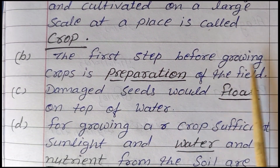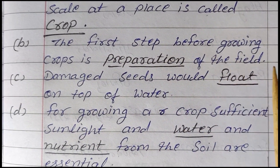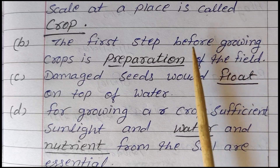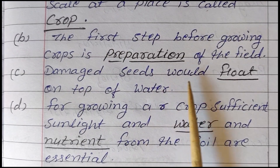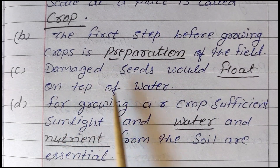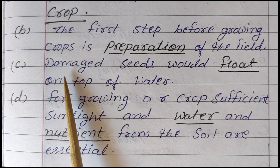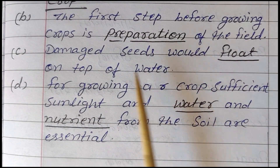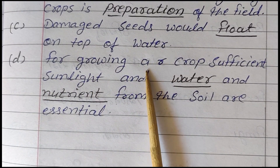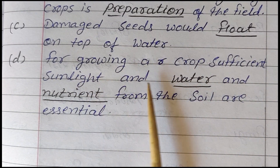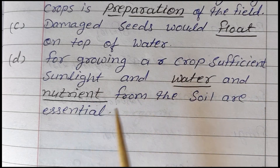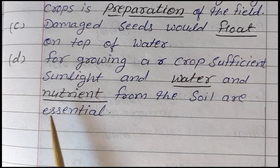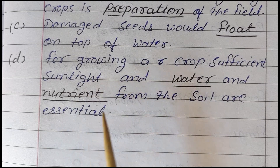B: The first step before growing crops is preparation of the field. (Khet mein fasal borne se pehle hame khet ko taiyar karna padta hai.) C: Damaged seeds float on top of water. D: For growing a crop, sufficient sunlight, water, and nutrients from the soil are essential. (Faslon ki uchit vriddhi ke liye dhoop, pani aur khanij tatva mitti se milte hain.)